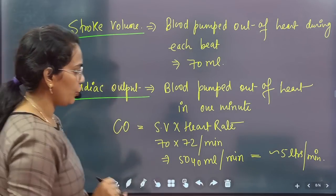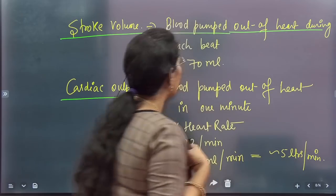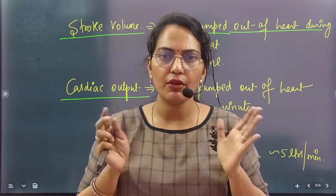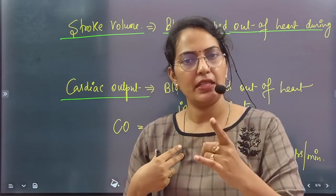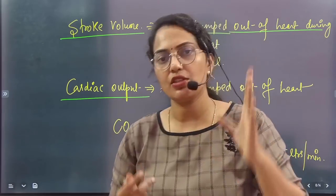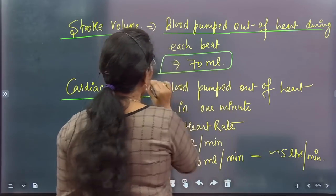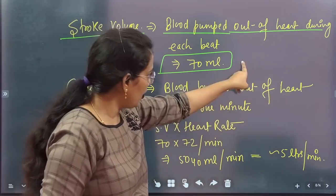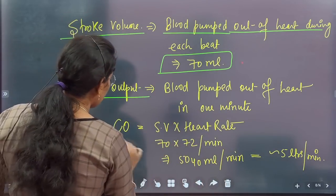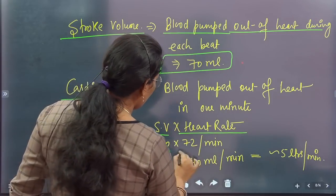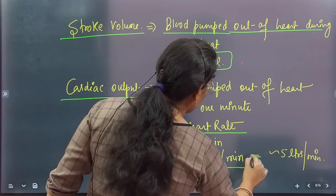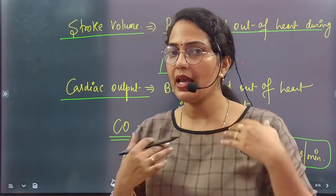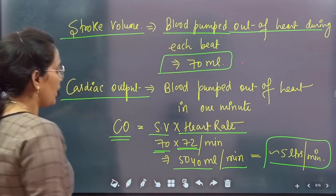Stroke volume and cardiac output are also very important. Stroke volume is the amount of blood pumped out of the heart in one beat — when the ventricle contracts, blood comes out. In one beat, 70 ml of blood comes out, so stroke volume is 70 ml. Cardiac output is the blood pumped per minute: stroke volume × heart rate = 70 × 72 = 5040 ml per minute, approximately 5 liters per minute.